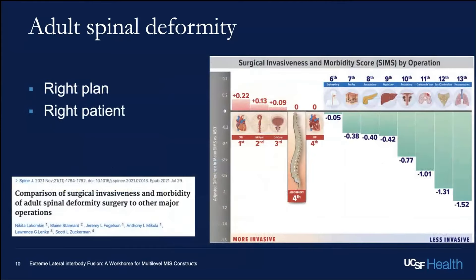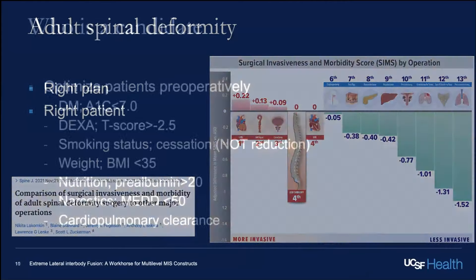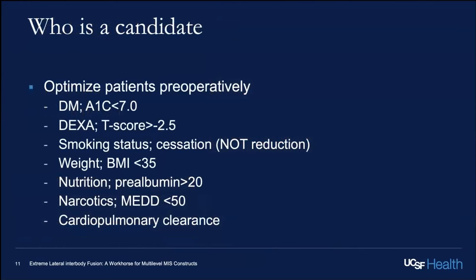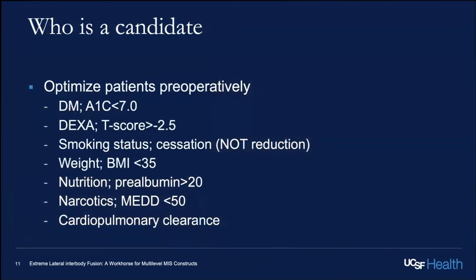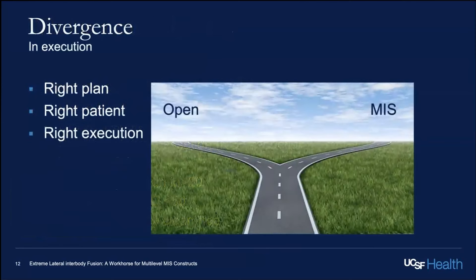You have to select the right patient. These surgeries are big operations with a lot of blood loss — equivalent to transplant surgery and cardiac bypass. So you have to optimize the modifiable risk factors in these patients, select the right patient, and optimize them pre-operatively.